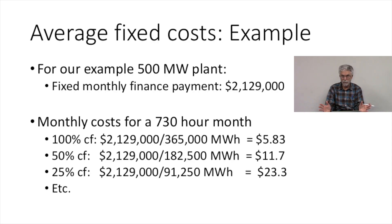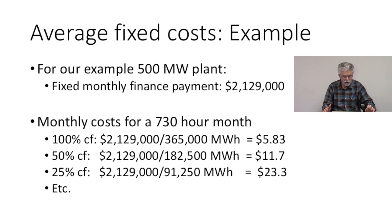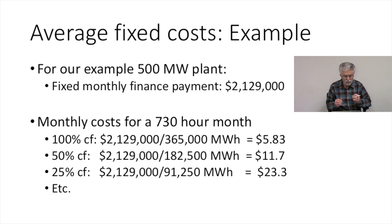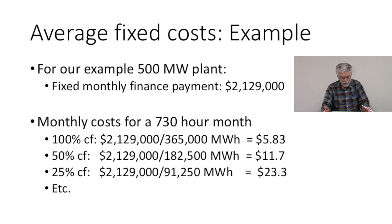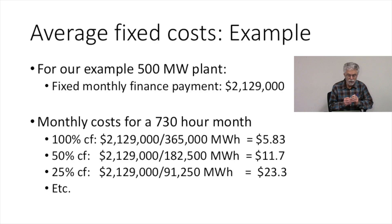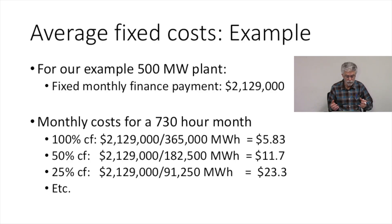Let's go through a quick example on fixed costs. The exercise here is to make sure we're all talking about costs in precisely the same way. We're going to take our 500 megawatt power plant with a fixed monthly payment of $2,129,000 and calculate our fixed costs for various capacity factors.